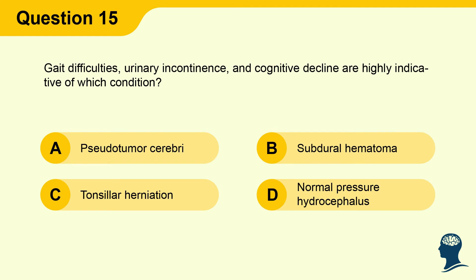Question 15: Gait difficulties, urinary incontinence, and cognitive decline are highly indicative of which condition? A) Pseudotumor cerebri, B) Subdural hematoma, C) Tonsillar herniation, D) Normal pressure hydrocephalus.